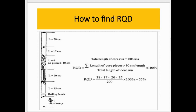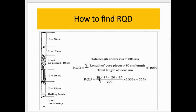We are not considering pieces less than 10 cm for the calculation of RQD. The formula is: RQD equals the sum total length of core pieces greater than 10 cm divided by total length of core run, multiplied by 100. The total core run is 200 cm. The pieces we consider are 38 cm, 17 cm, 20 cm, and 35 cm. Their total divided by 200 cm equals 55%, so this is the RQD.